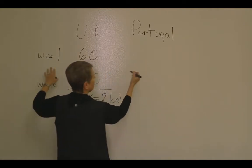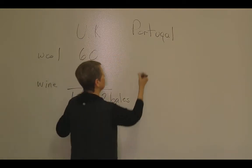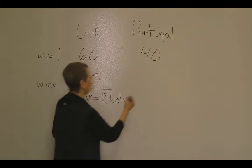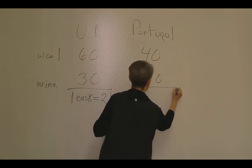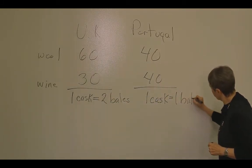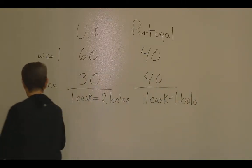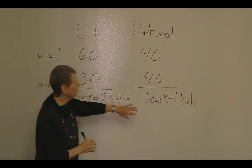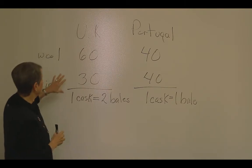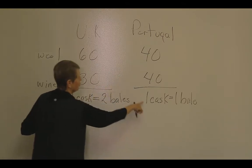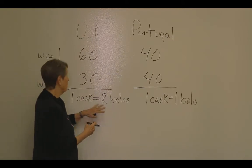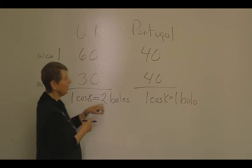In Portugal, if we use a worker full time in the wool industry, at the end of the given time period we'd have 40 bales of wool. If we use the worker in the wine industry, we'd have 40 casks of wine. So in Portugal, one cask equals one bale. You can see there's a difference: in Portugal a cask of wine only costs one bale of wool, but in the United Kingdom a cask of wine costs two bales of wool — so it's more costly in the United Kingdom to make wine.